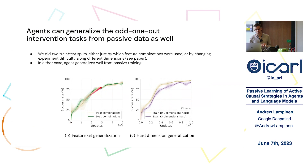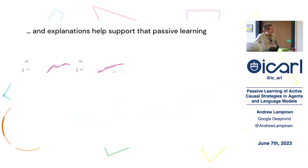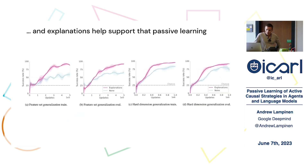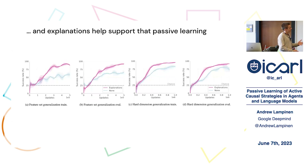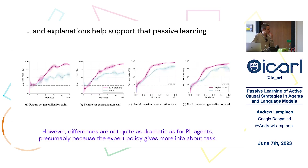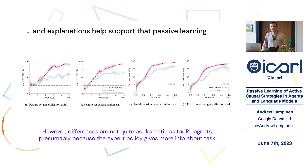Like in the prior work, we found that explanations help to support passive learning. On these four plots, the pink curves show agents trained with explanations and the blue curves show an ablation without explanations. The pink curves are always doing better than the blue curves, so explanations are helpful. But the differences aren't as dramatic as they are for reinforcement learning agents — presumably because the expert policy gives more information about the task than is easy to get from the world alone.